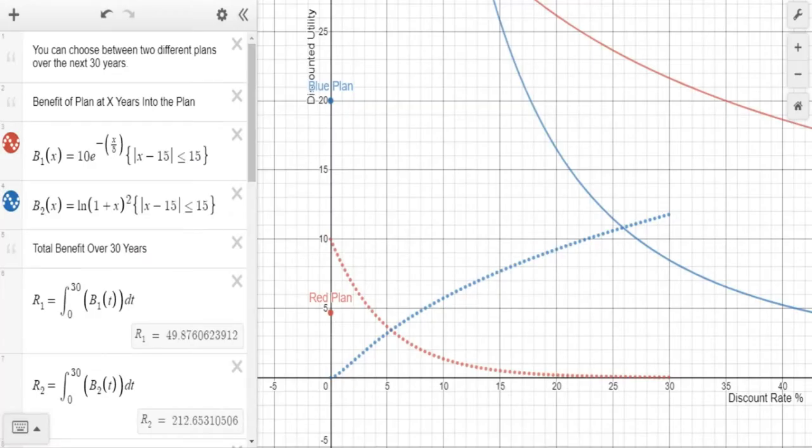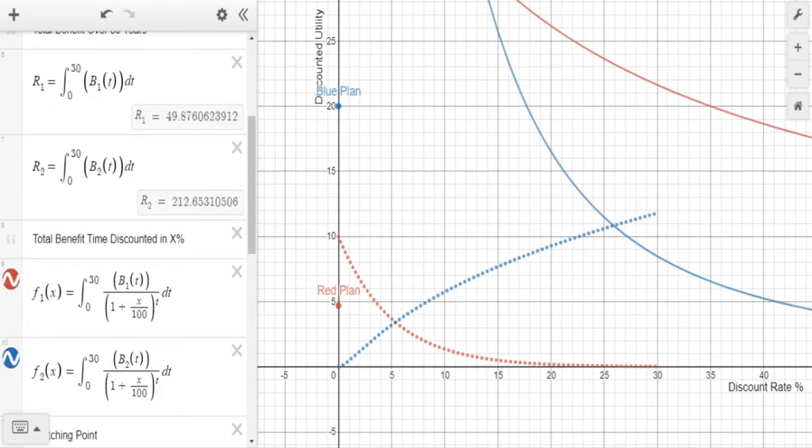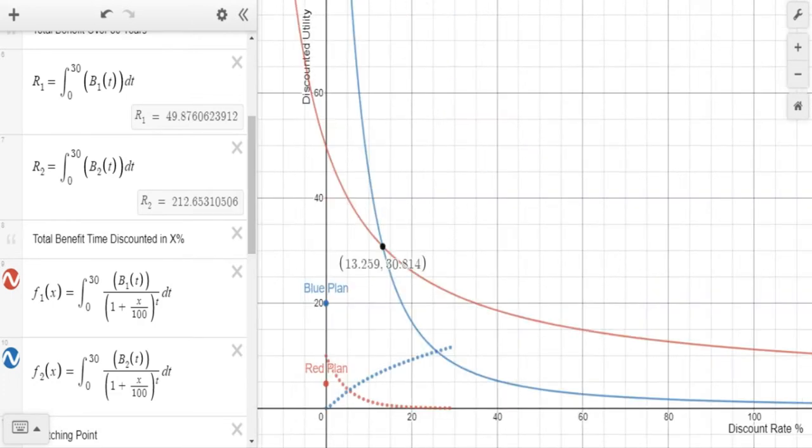Okay, so we're back into Desmos for another example. So we can choose between two different plans over the next 30 years. So these two functions right here are the benefit of the plan at x years into the plan. They are at the same or no cost. So there's no difference between how much cost we're paying, we just get the benefits. So we have to make a choice. Now if we look at it right here, the total benefit of choosing the blue plan is greater than the total benefit of choosing the red plan. However, we have to wait a period of time before we can actually experience or realize those gains of the blue plan. So the question that we have to figure out is which plan is worth it. And so this is really just a question for discount rates. How much do we discount the future as compared to the present?